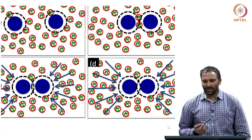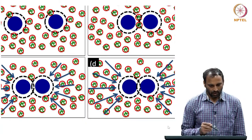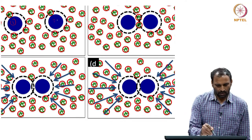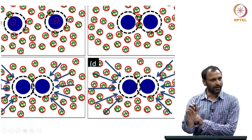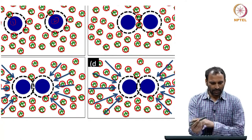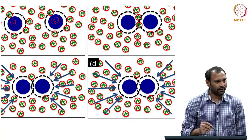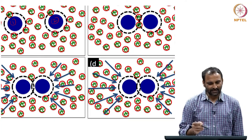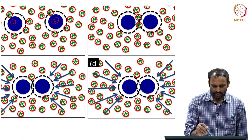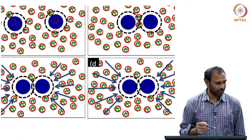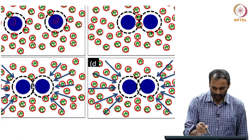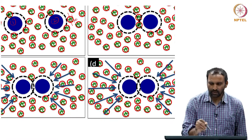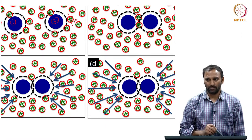This is a cartoon showing particle 1 and particle 2. There is a dashed line around each particle — the size of that dashed region is what is called the depletion layer. The size of the depletion layer is actually half the size of the polymer.